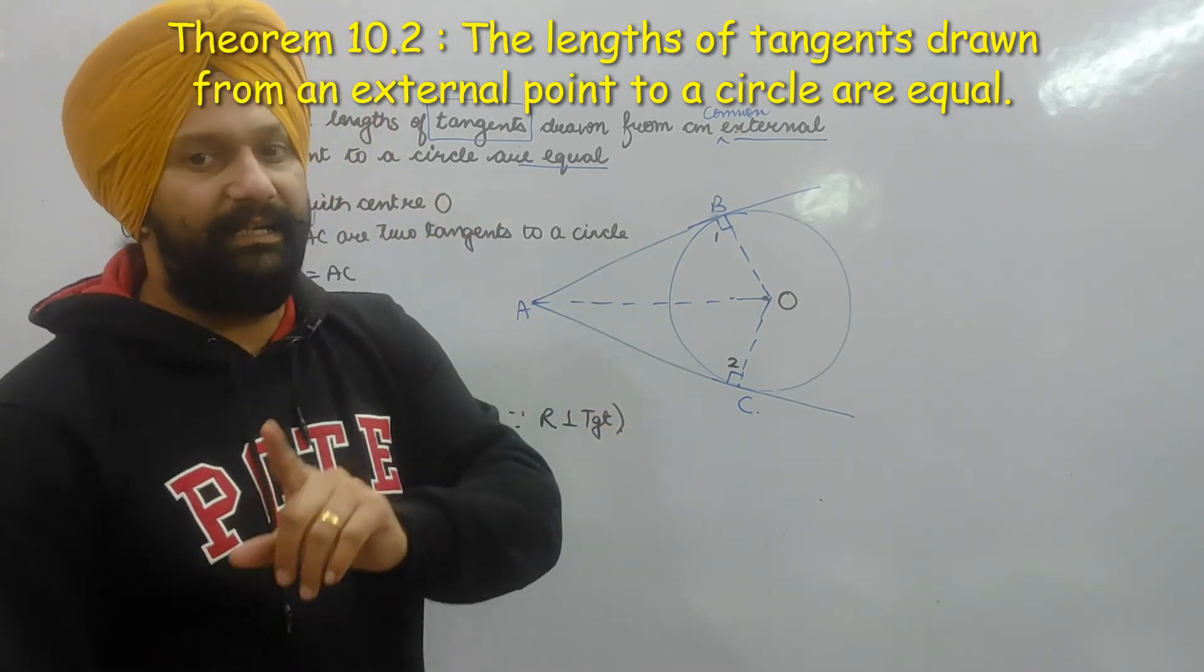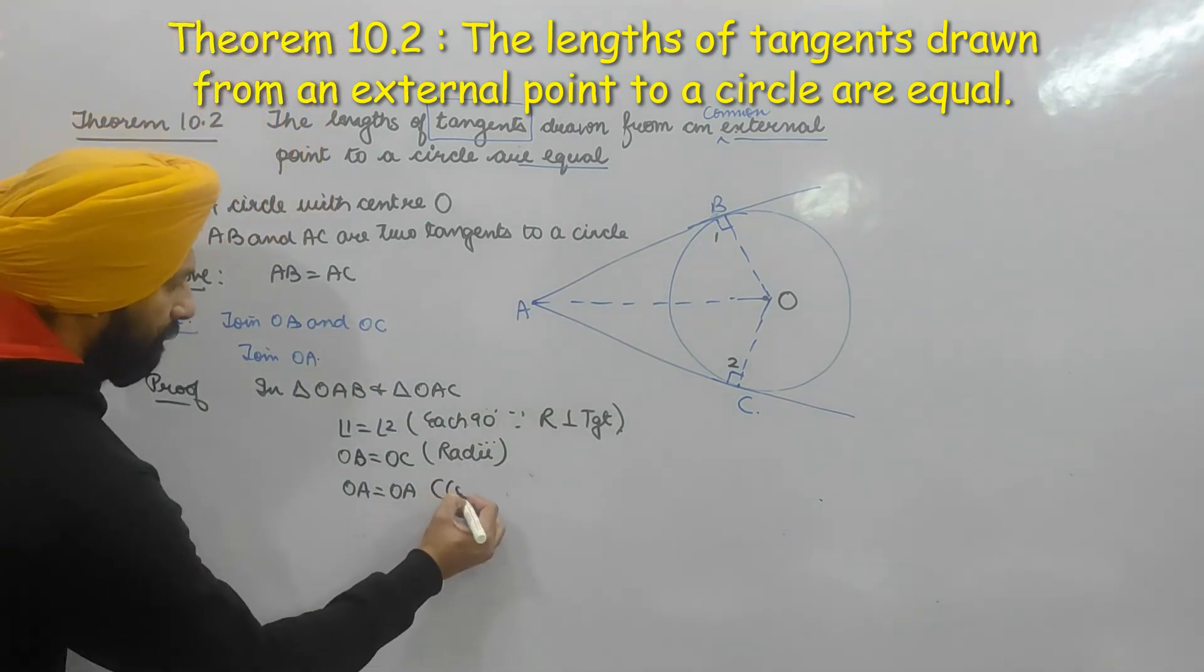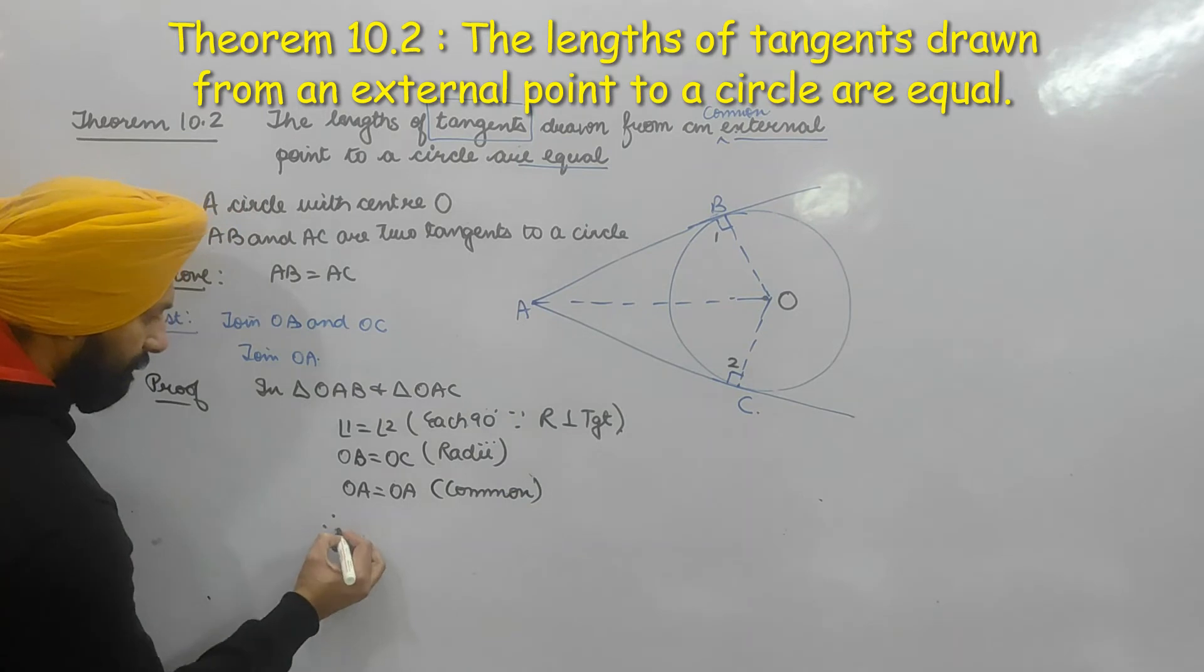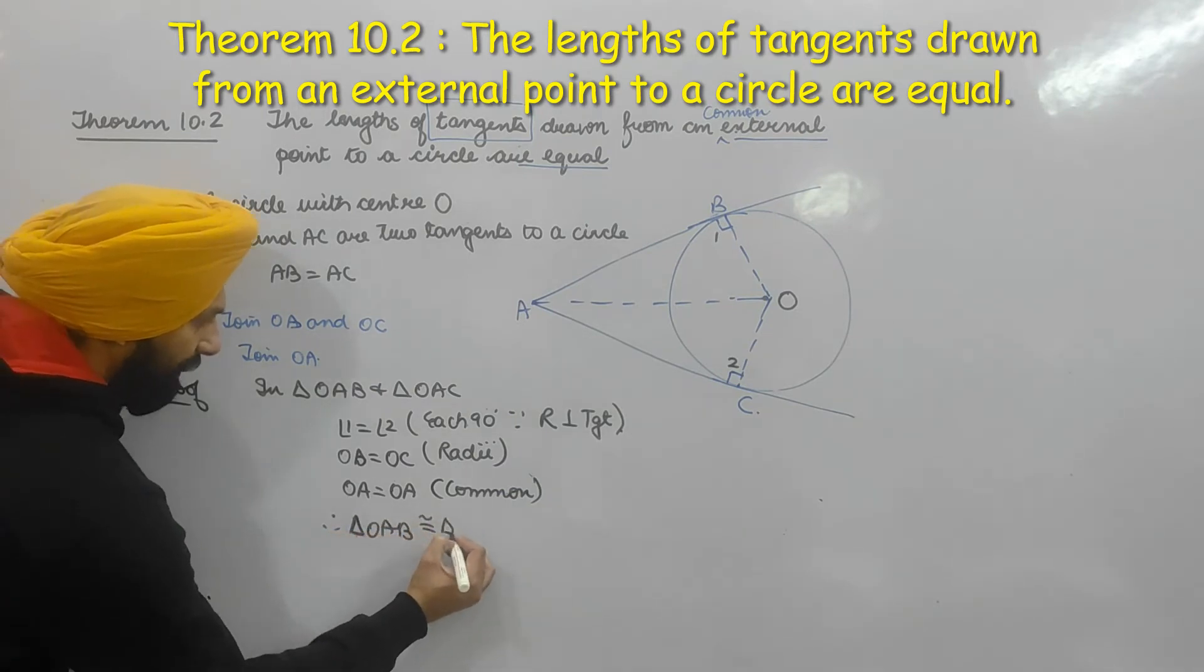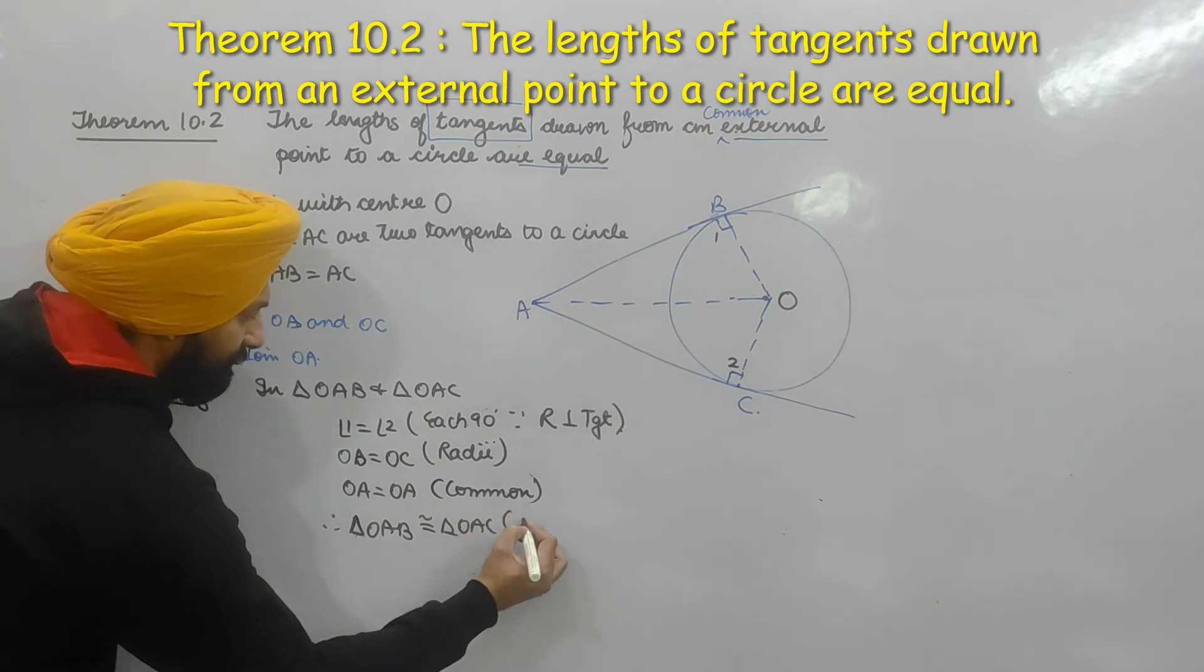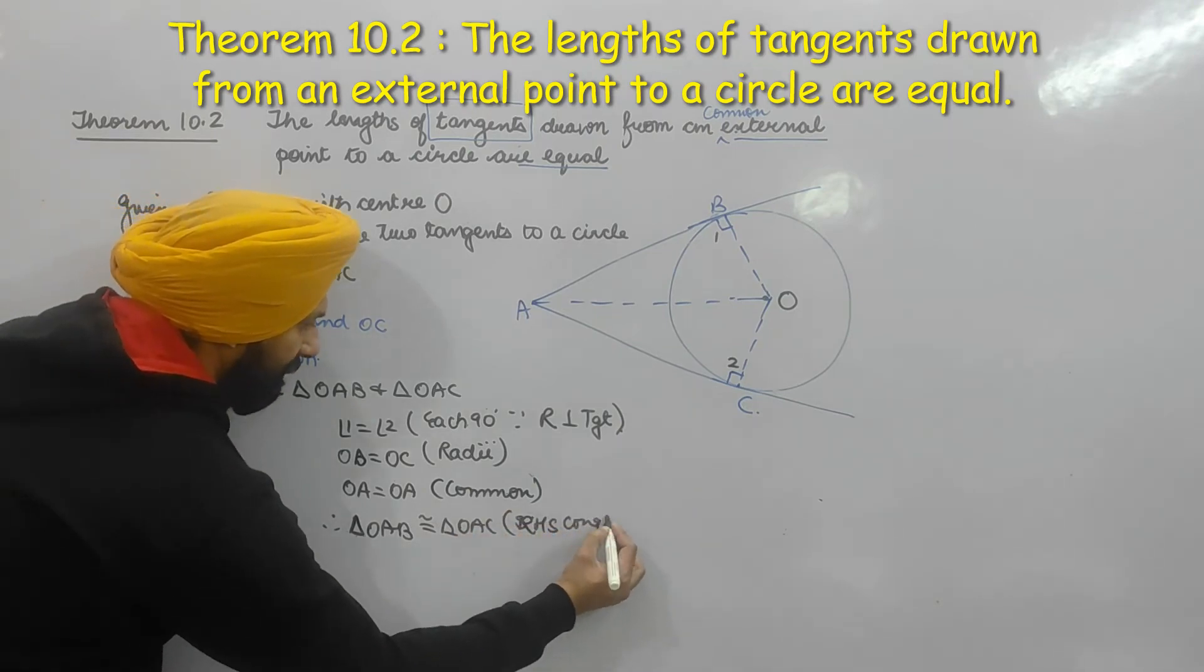So here I am going to have triangle OAB is congruent to triangle OAC using RHS congruency. Is that okay?